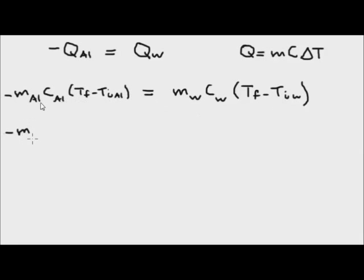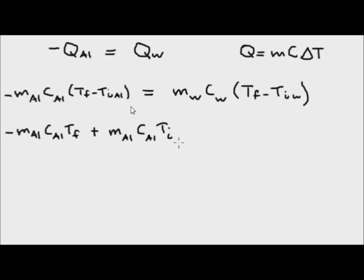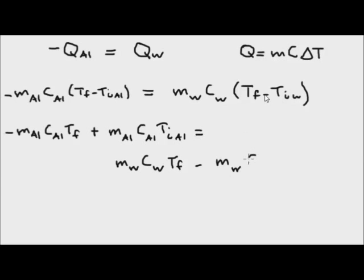Now I want to distribute the mass and the specific heat. I'll multiply through by the Tf value — notice I keep the negative sign. Because it's minus the initial temperature of the aluminum, that will change the sign to a plus sign, giving us mass of aluminum times specific heat of aluminum times starting temperature of aluminum. On the other side: mass of water times specific heat of water times final temperature, minus mass of water times specific heat of water times starting temperature of water.